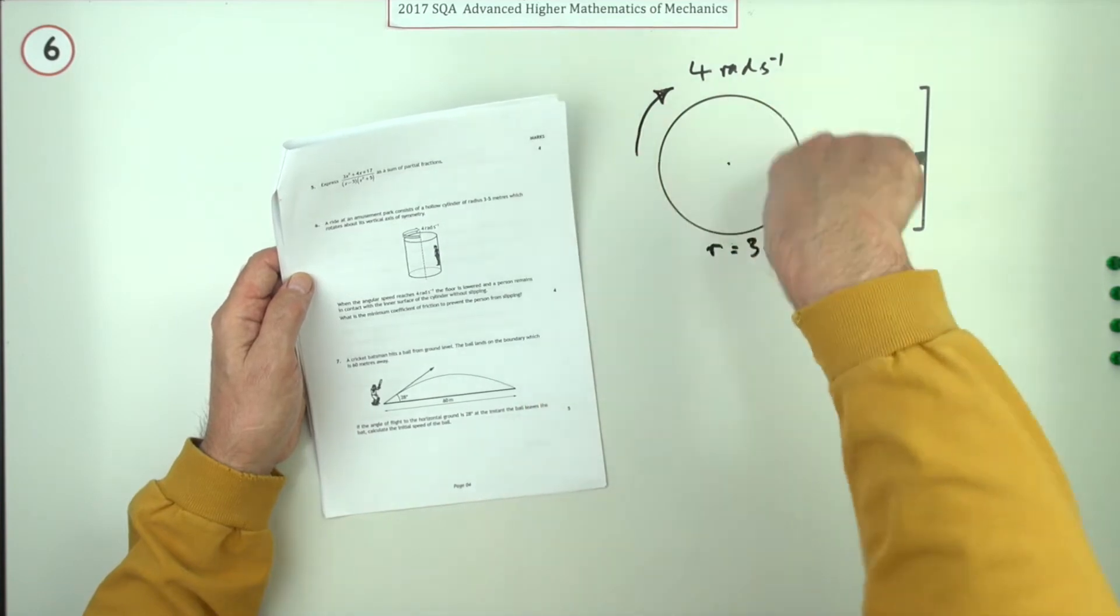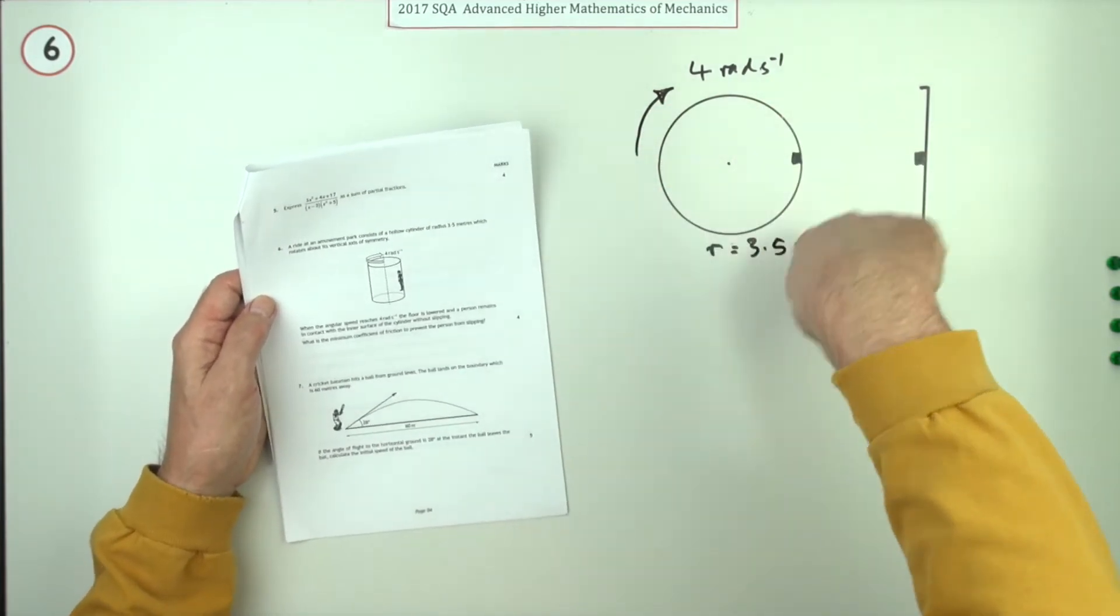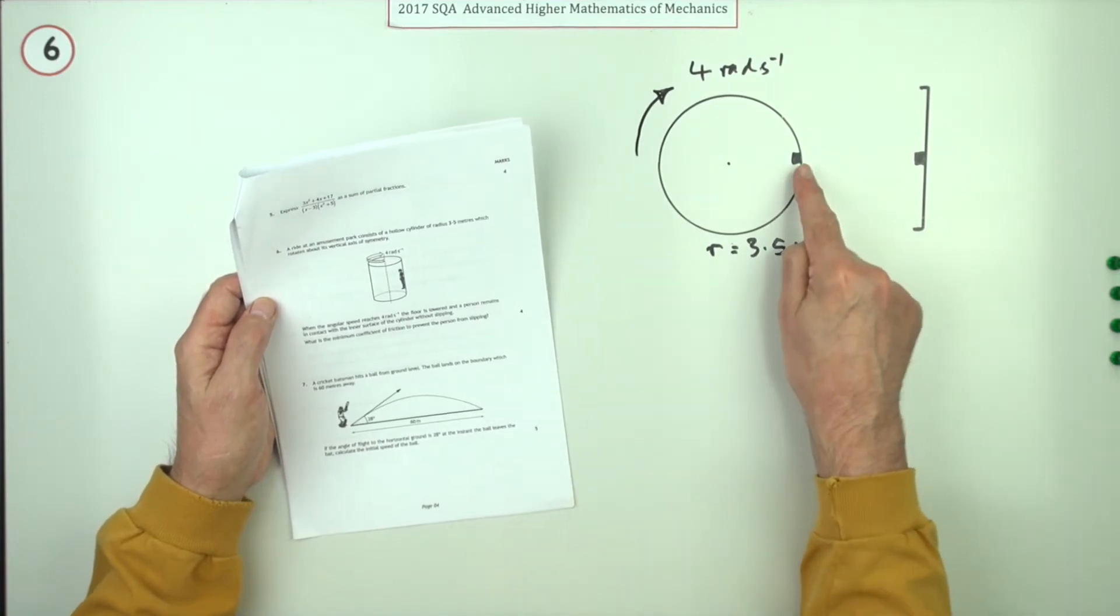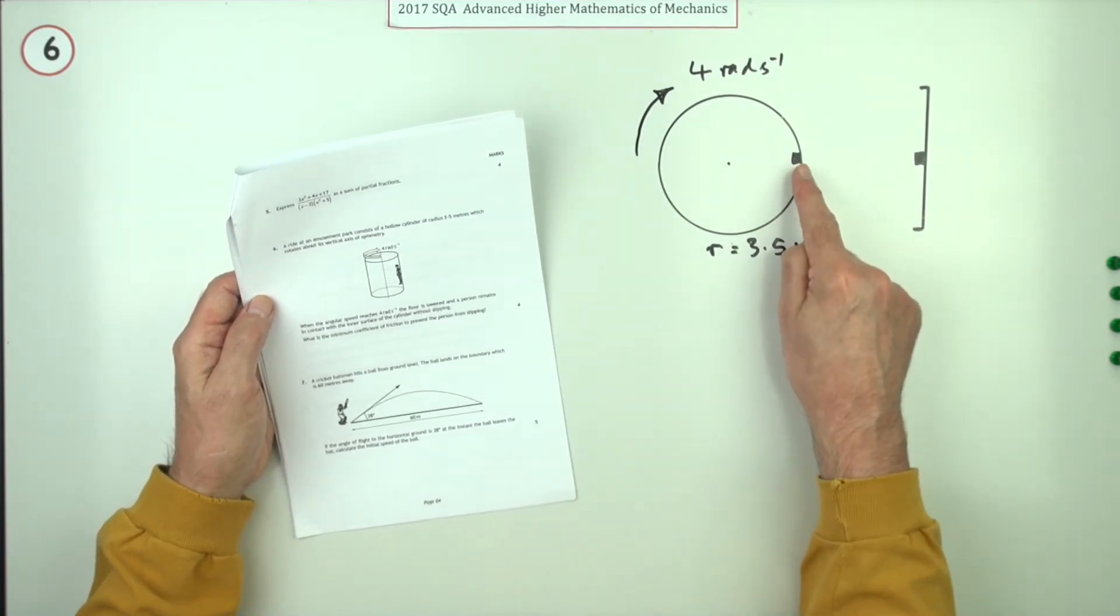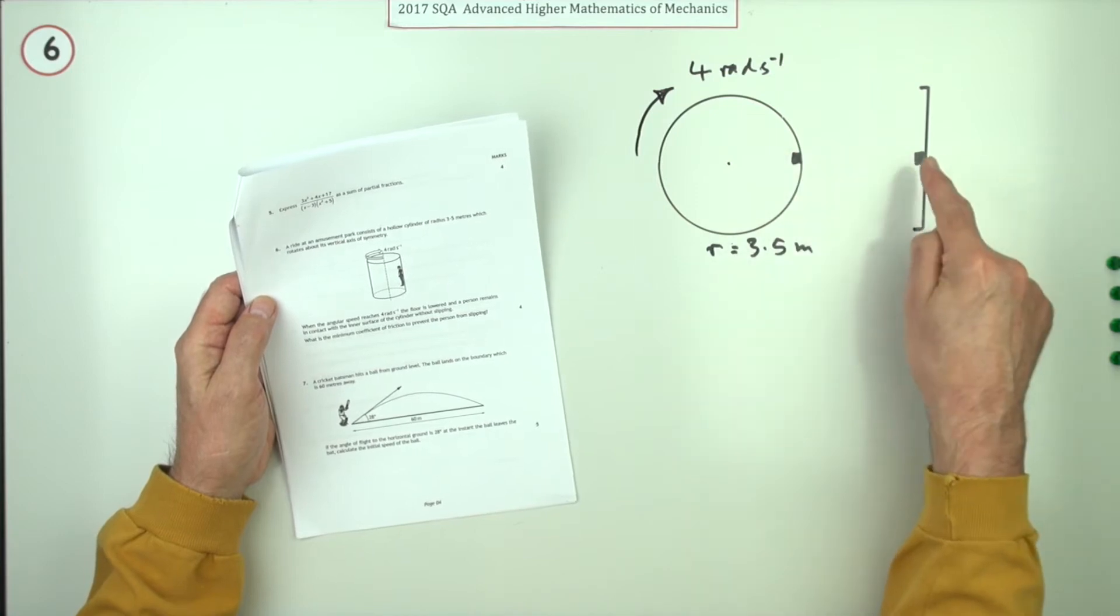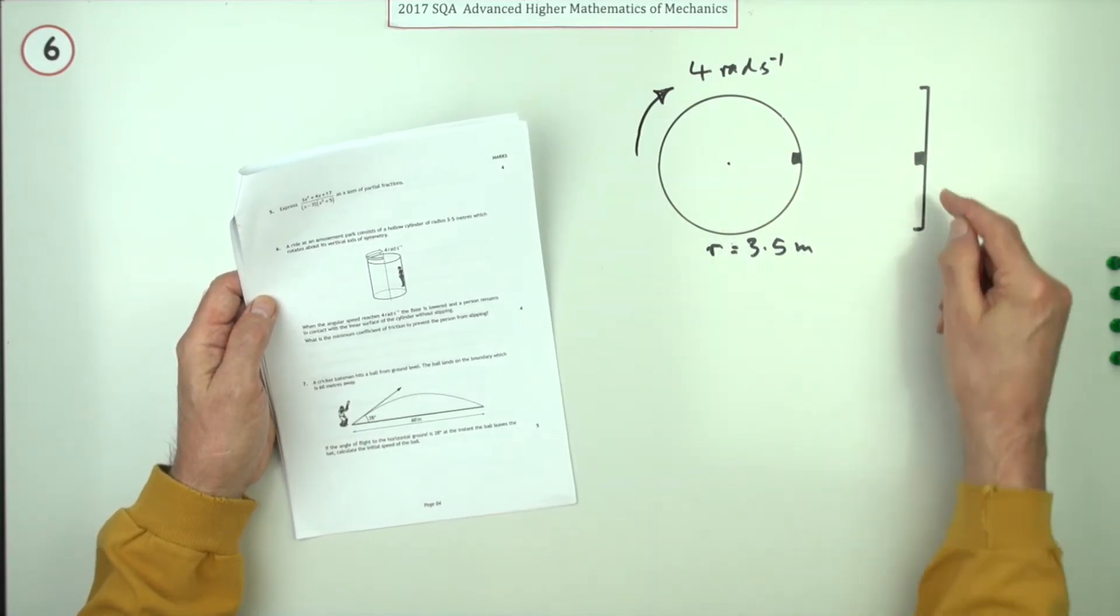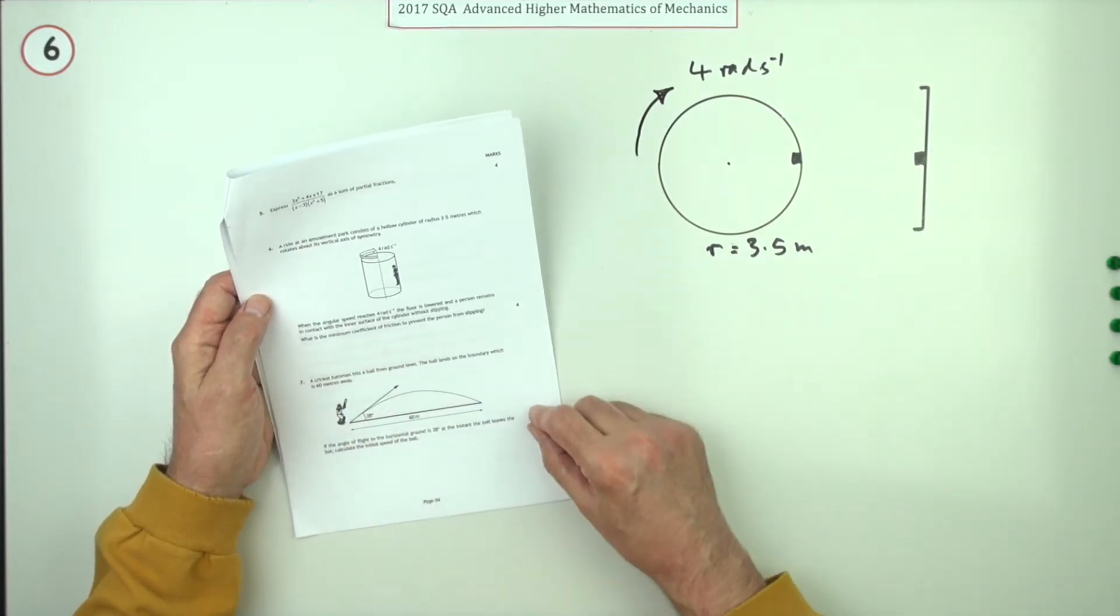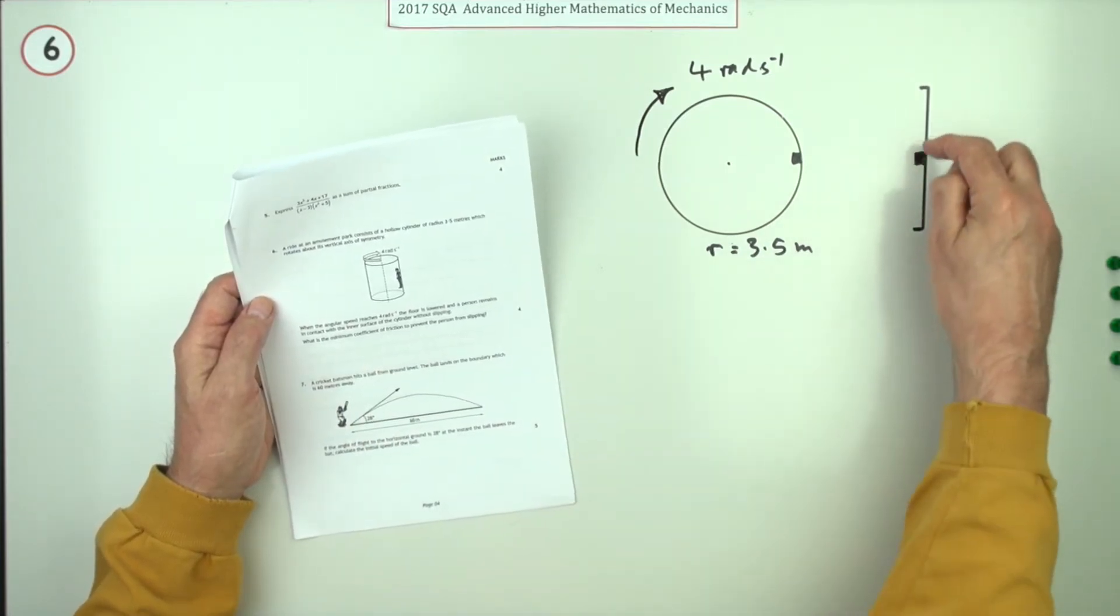There's somebody standing on the floor when that's lowered. That person's got to remain at rest - this is the side view - so they don't slip down, they're going to be stuck onto it. What's the minimum coefficient of friction to prevent the person from slipping?